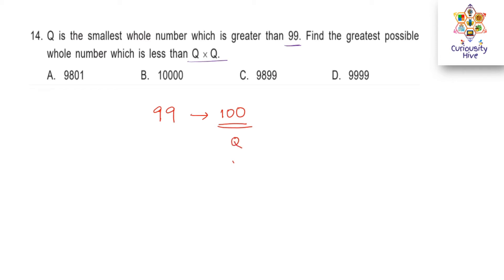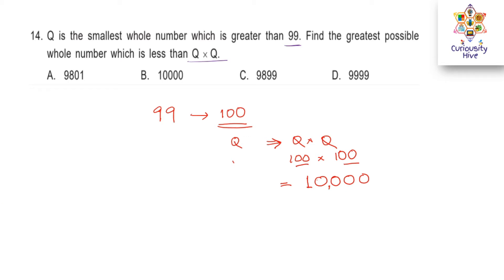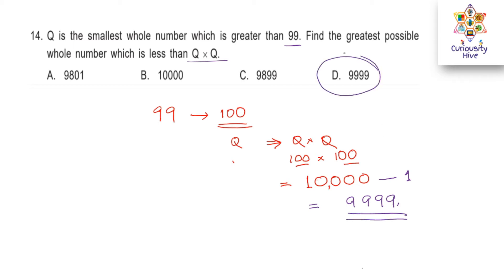Find the greatest possible whole number which is less than Q times Q. So Q times Q is 100 times 100. There are four zeros, so the answer is 10,000. Which number is the greatest whole number less than 10,000? We subtract 1, giving us 9,999. So your answer is option D.